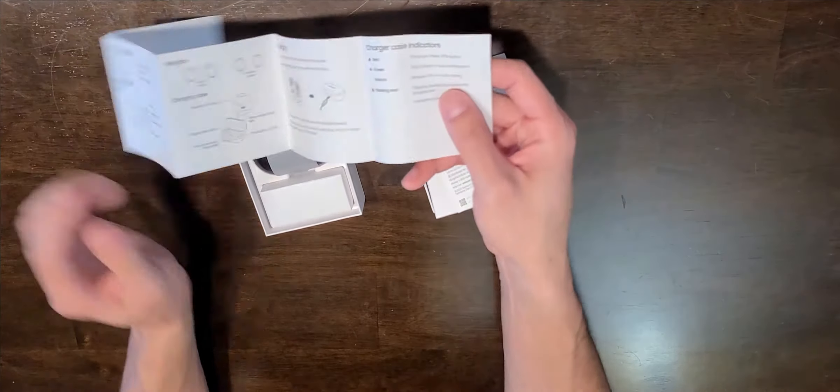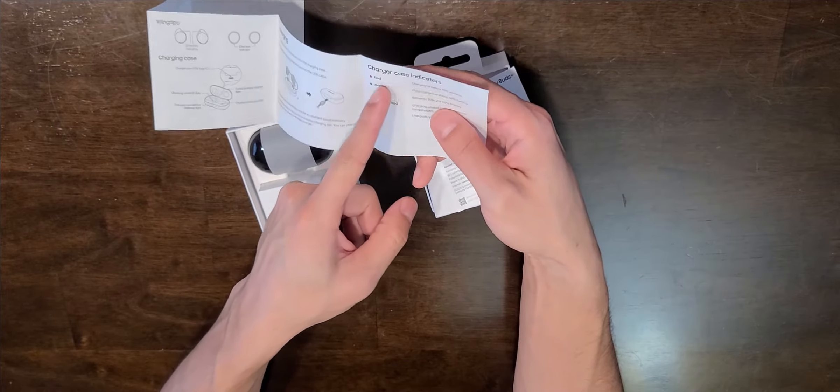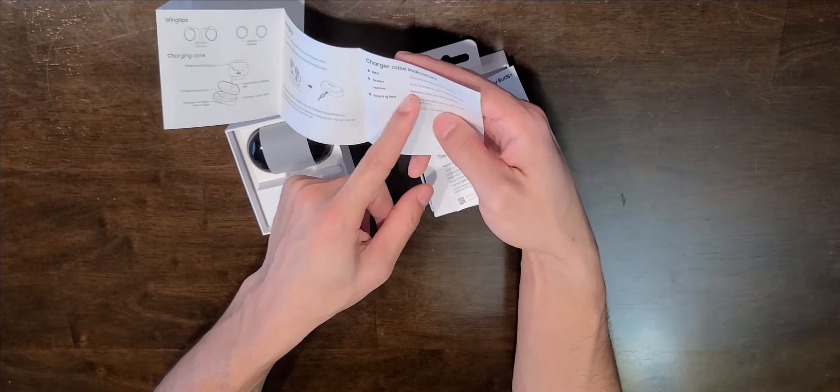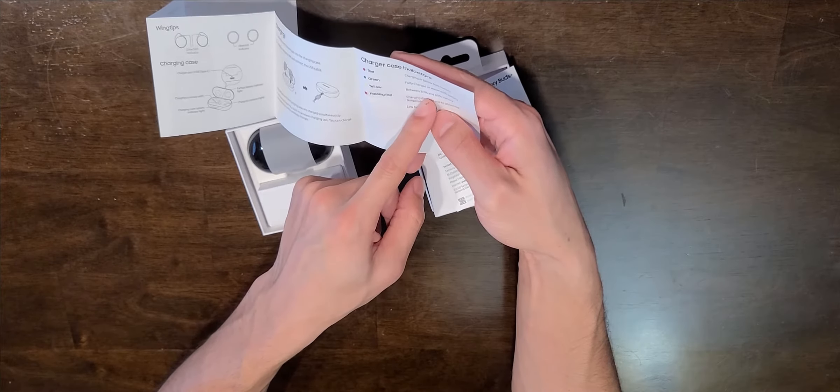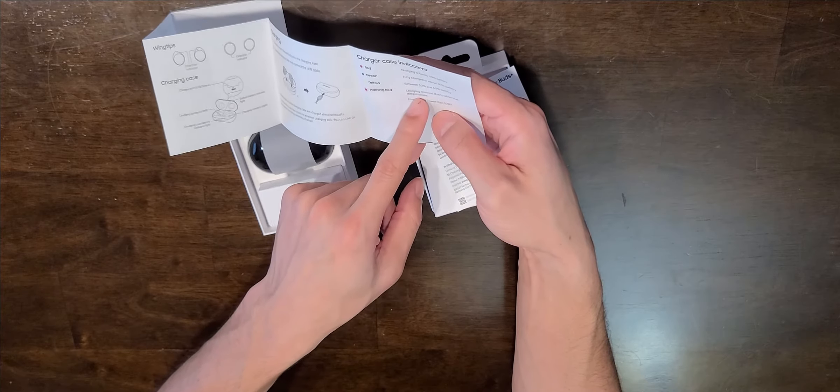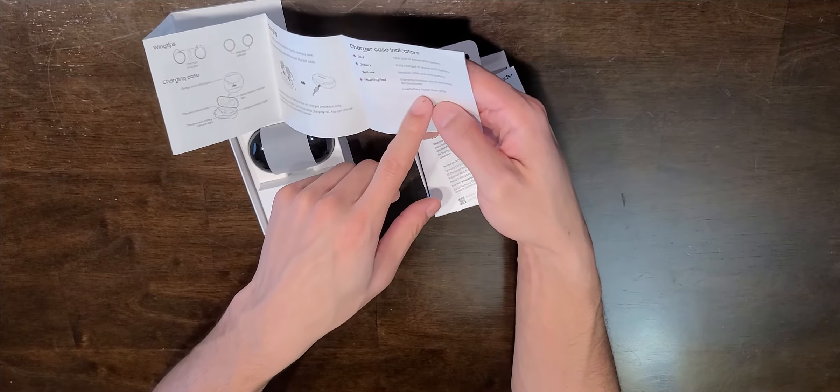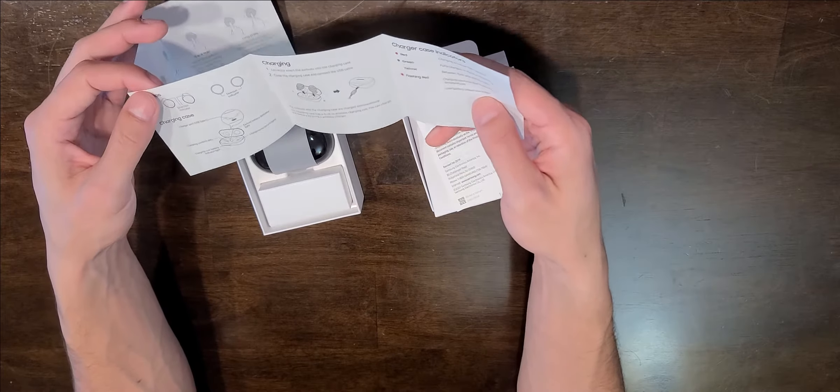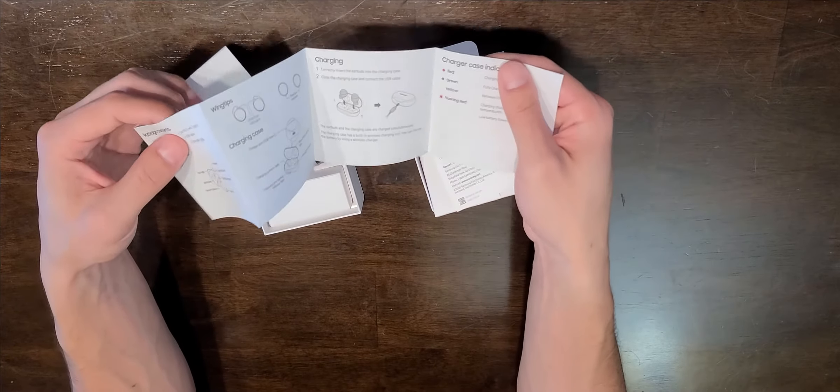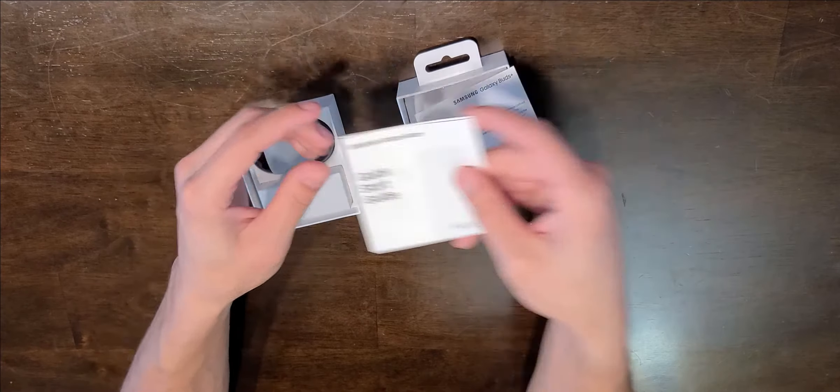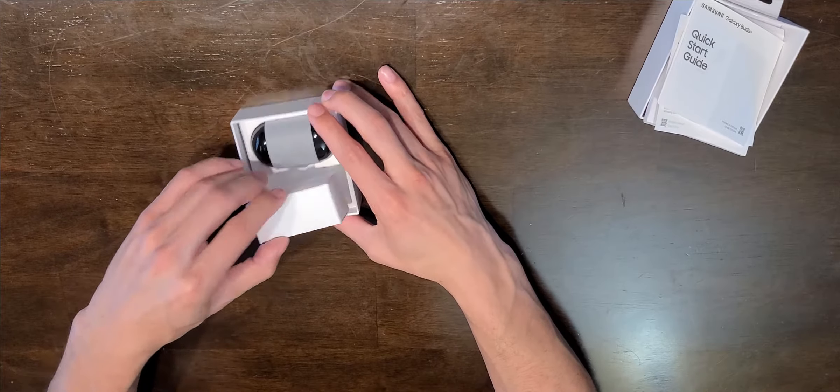We're going to review those because you got to know what these charger indicators mean. Red below 30%, green fully charged, yellow between 30 and 60. They give you a yellow, wow look at that. Flashing red, charging disabled due to abnormal temperature. That's probably when it gets too hot. Low battery, that's pretty nice. Come to the yellow light, go figure.